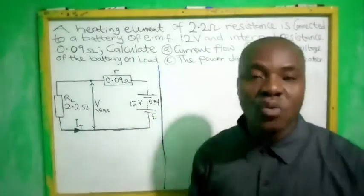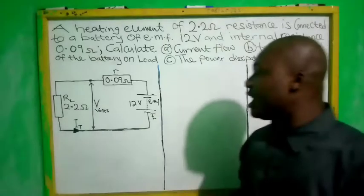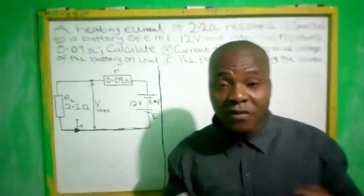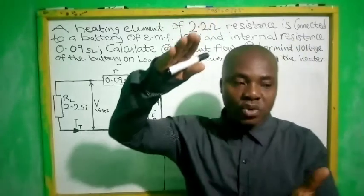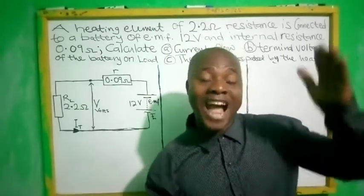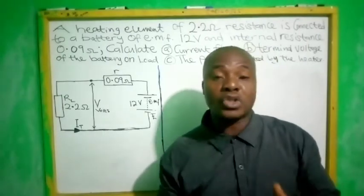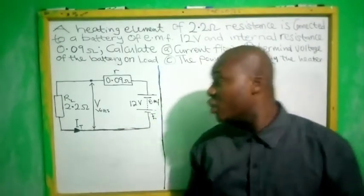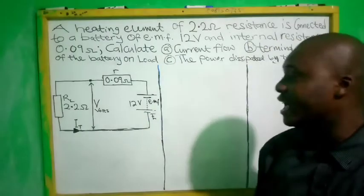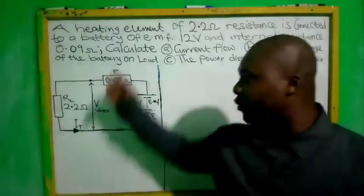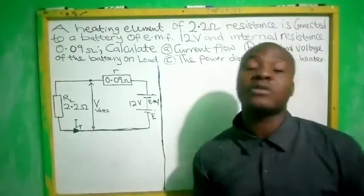If there is no load connected, then EMF equals terminal voltage. Using a car battery as an example: if it has a generated voltage of 12 volts and no load is connected, no current flows, and when you test the cathode (negative side) and anode (positive side) with your meter, you will read the same voltage. But once a load is connected, current flows and the terminal voltage becomes lesser.